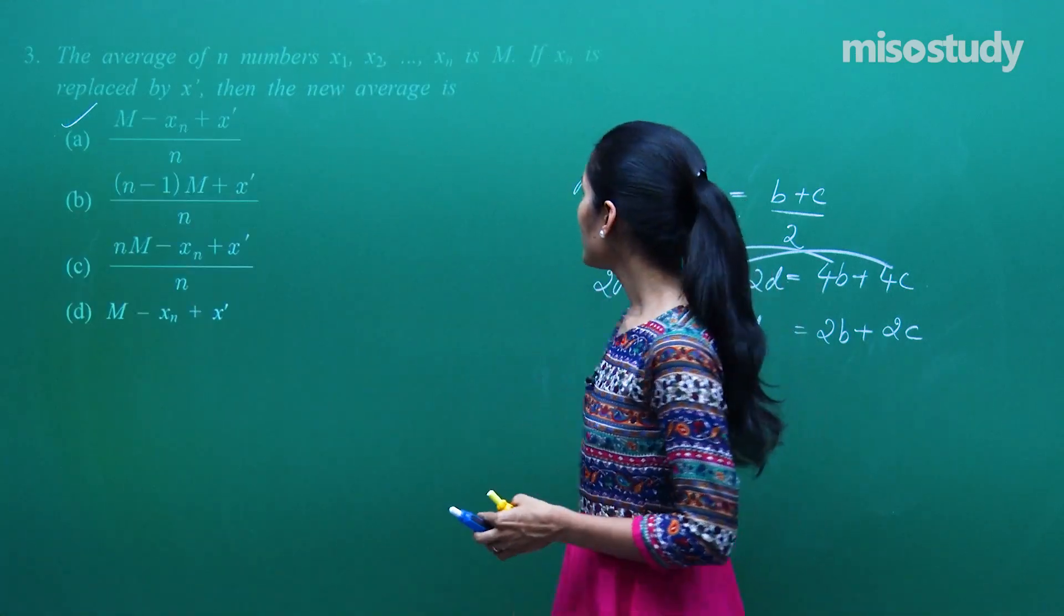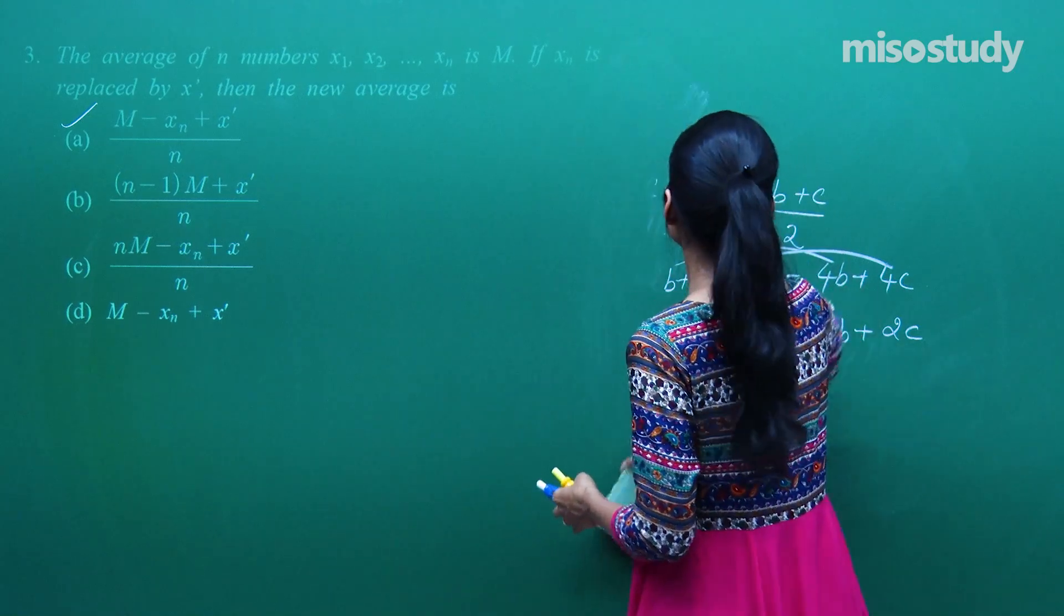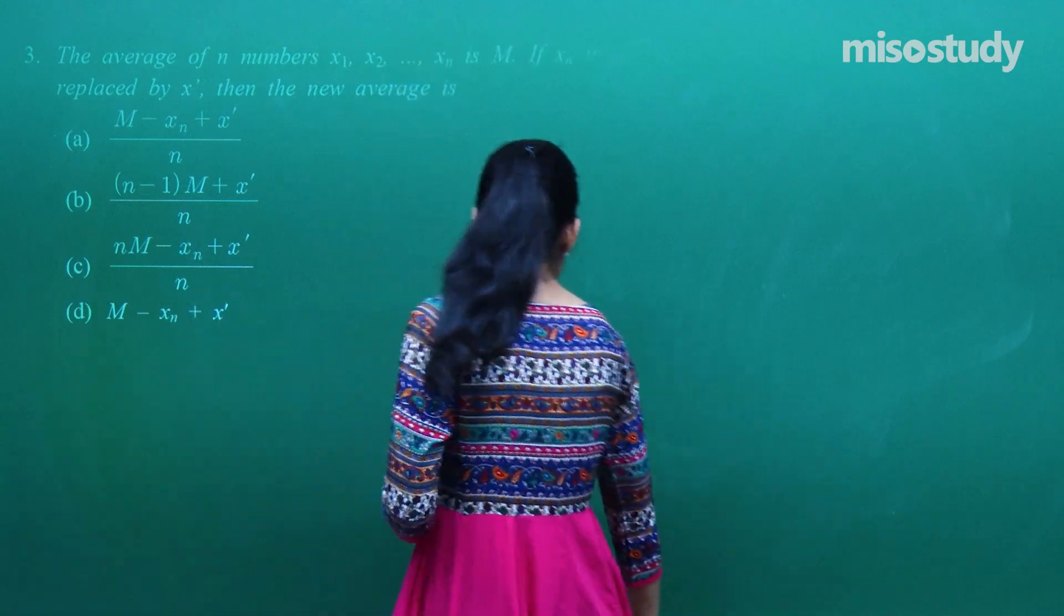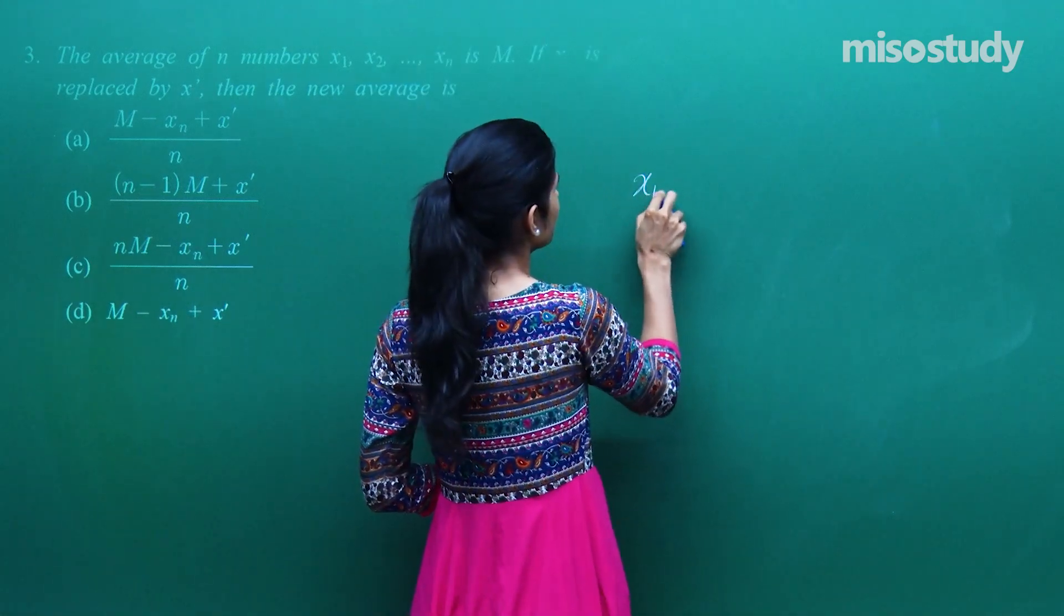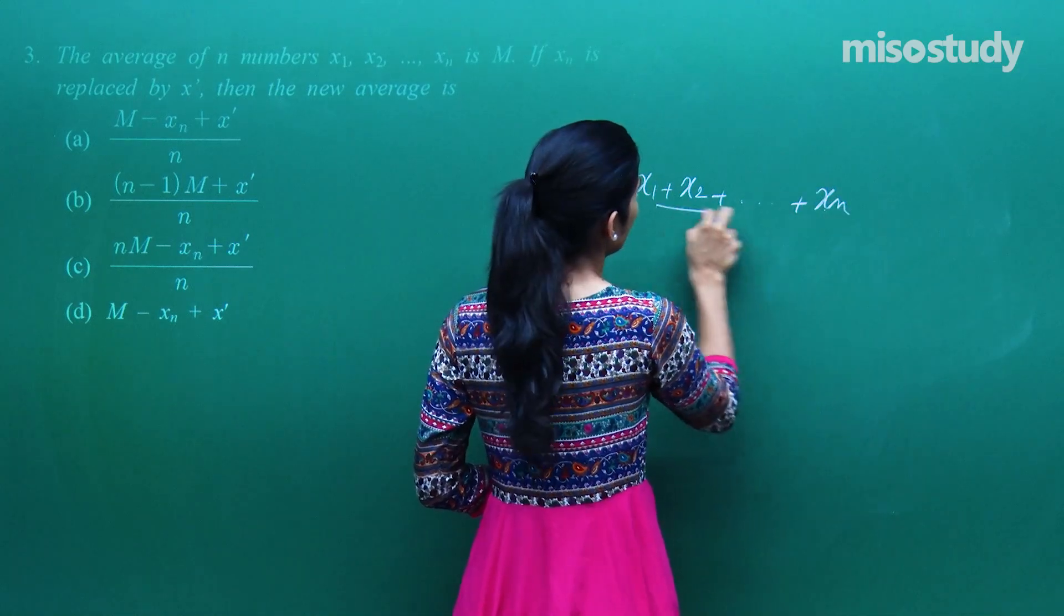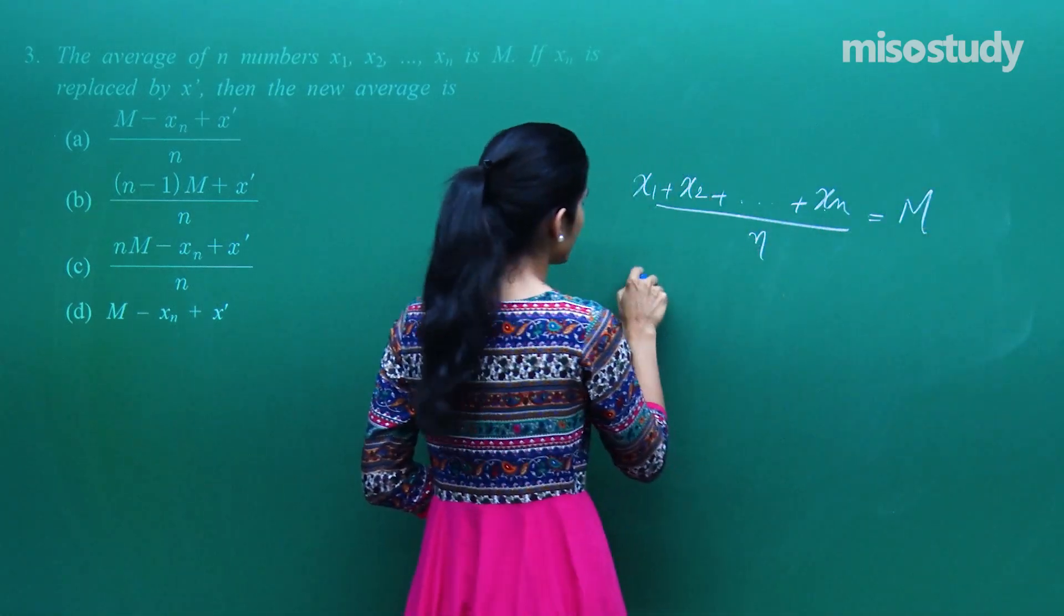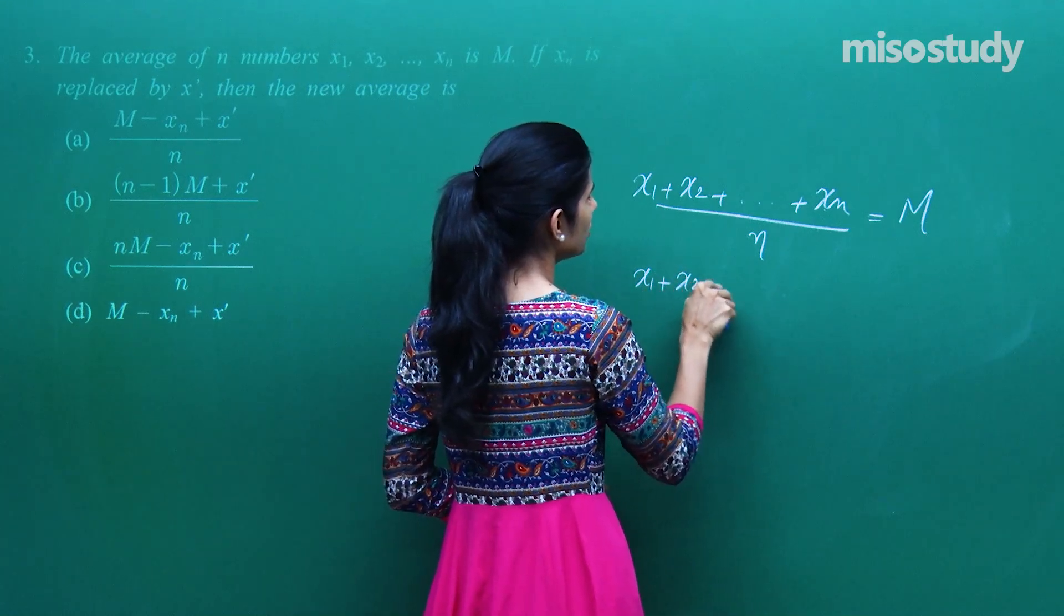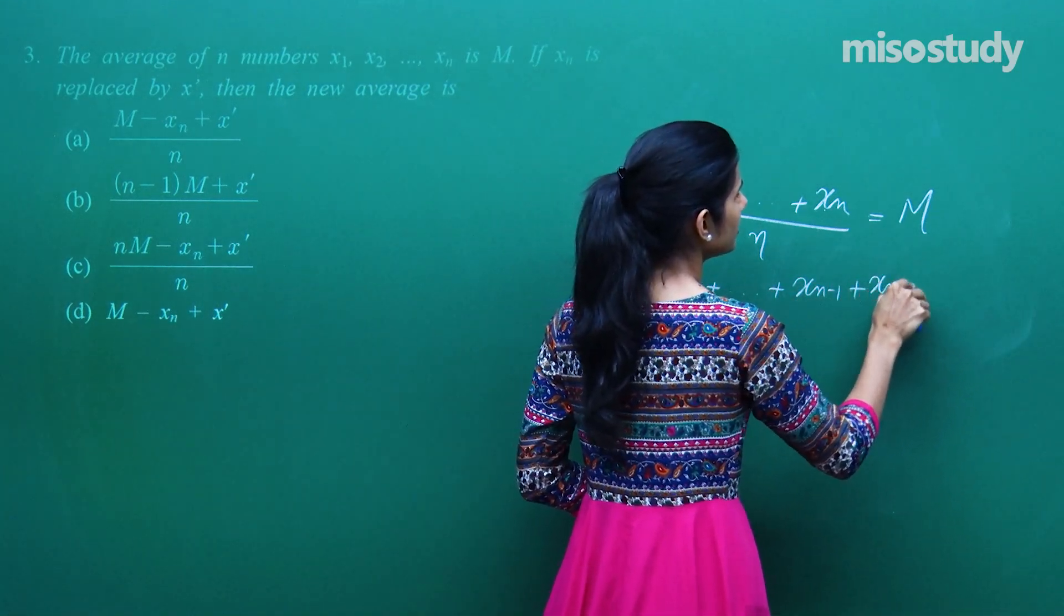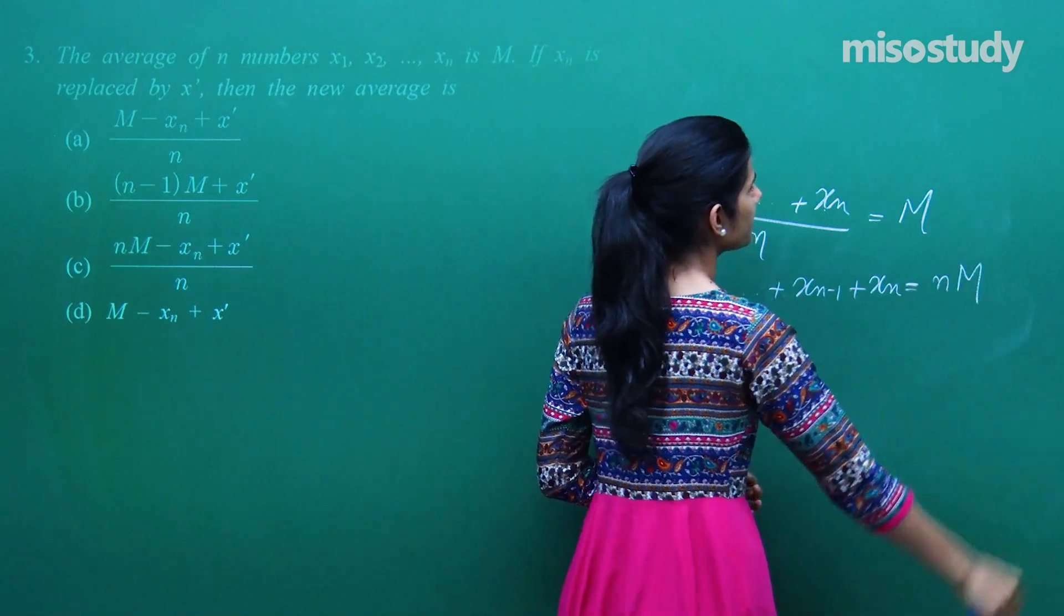The average of n numbers is capital M. Average of n numbers x1 plus x2 plus and so on plus xn whole upon n is capital M. Toh x1 plus x2 plus and so on plus xn is NM. That's it.